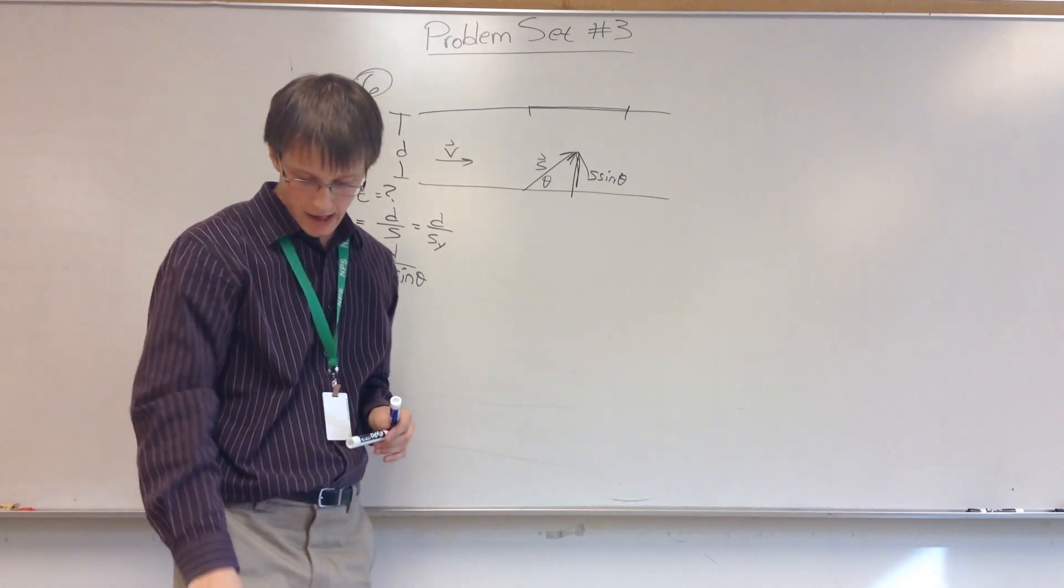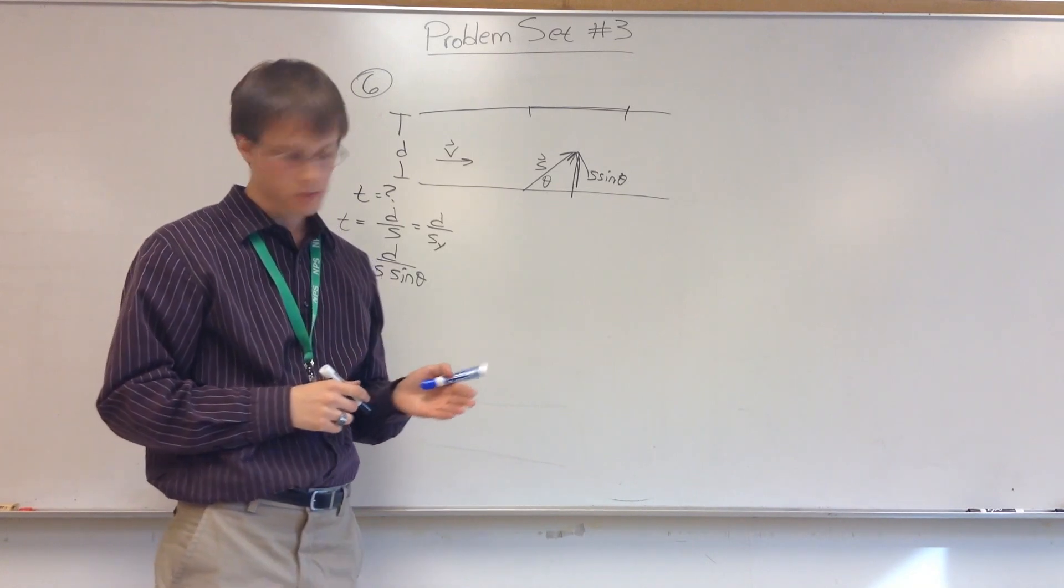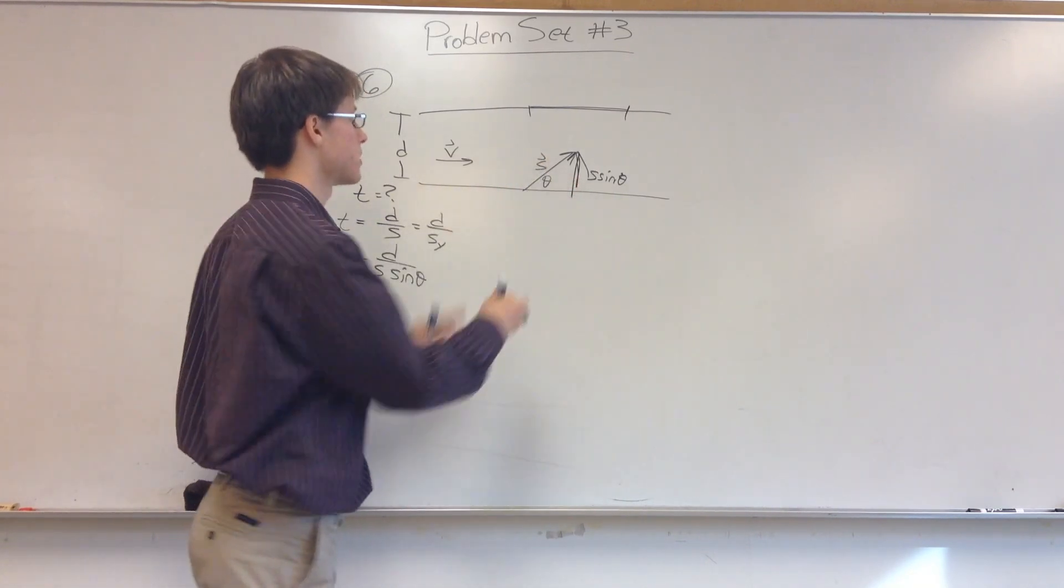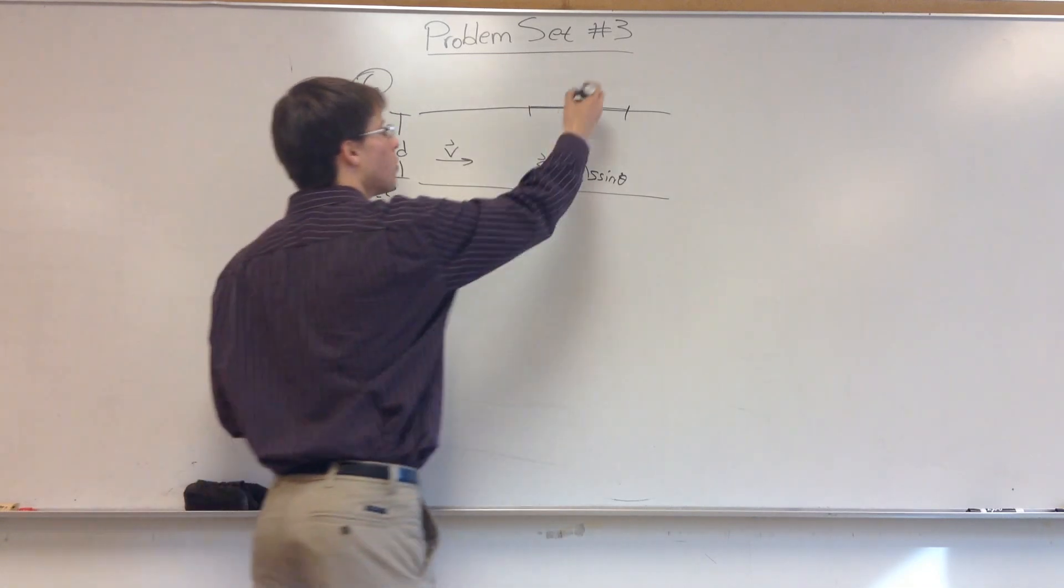Part two asks, how far downstream will the swimmer land? And answer these questions only for the case where 0 is less than theta is less than 90, so between 90 and theta is 0. So now we're interested in what is this distance,